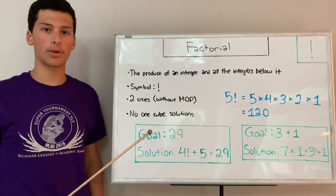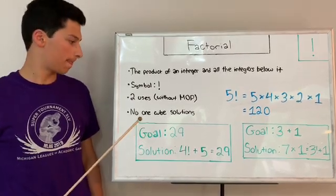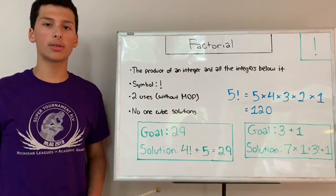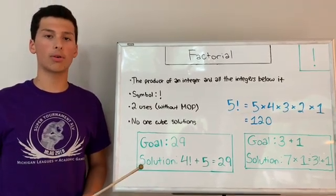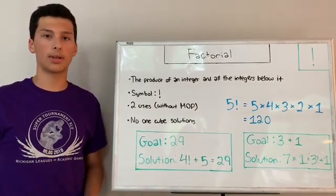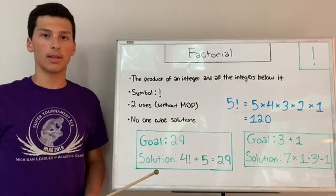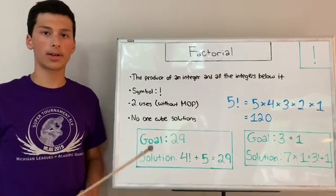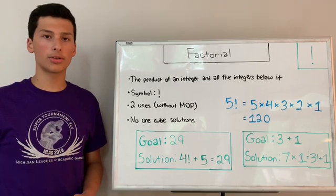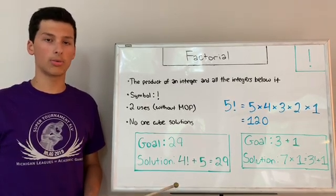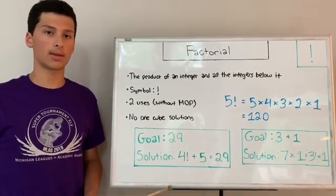You're only allowed to use the exclamation mark factorial 2 times in the goal and or the solution unless you've called MOP, which is another variation. I'll explain it later. You can't have one cube solutions. So, if you have a goal of 6, for example, and you do 3 factorial 3 times 2 times 1, that would not work because factorial, although it does count as an operation, it does not count as a cube, so it would still just be a one cube solution, and that's not allowed.